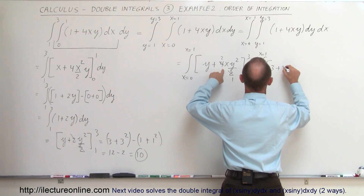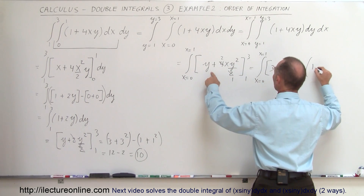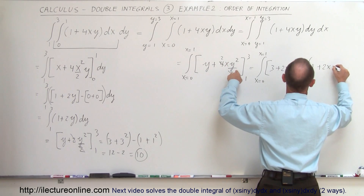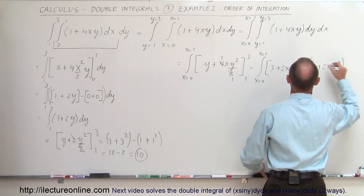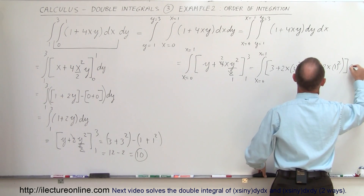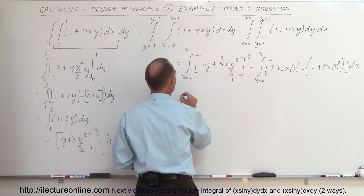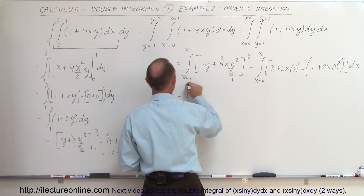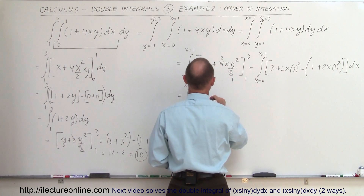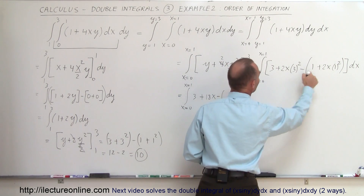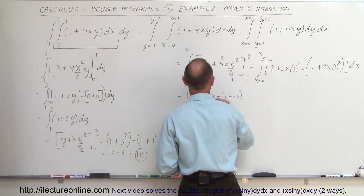Plugging in the upper limit y equals 3, we get 3 plus 2x times 3 squared, minus plugging in the lower limit y equals 1, we get 1 plus 2x times 1 squared, all times dx. So this equals the integral from x equals 0 to x equals 1 of: 3 plus 18x minus 1 plus 2x, which simplifies to 2 plus 16x, times dx.